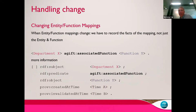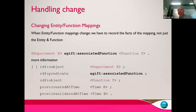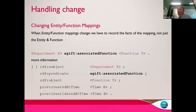To handle entity-function mappings properly, we take that relation out and talk about information about that relation. In the more information section: the subject is department X, the predicate is the associated-function relation, and the object is function Y — these three lines are exactly the same as the top assertion. But now we can say anything else we want about it. Here I've got a created-at time and an invalidated-at time. So maybe department X was associated with function Y in 2014, and due to machinery-of-government changes it was unassociated with that function in 2018 — created time at 2016, invalidated time at 2018. Now we have a time-bound association.